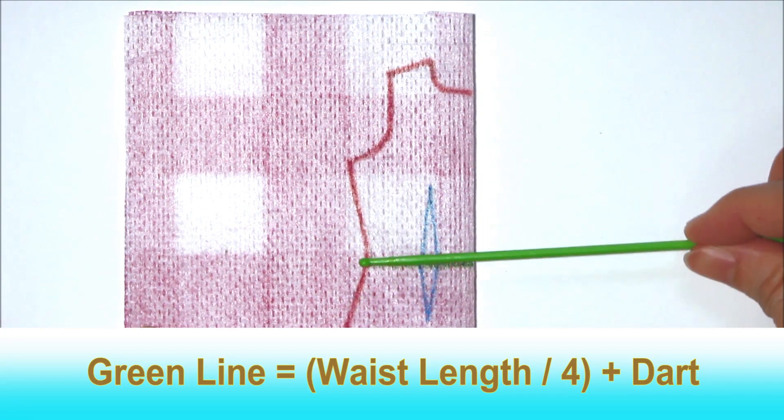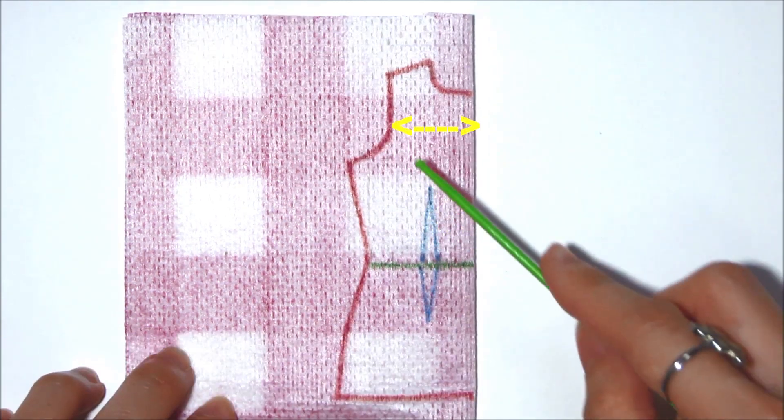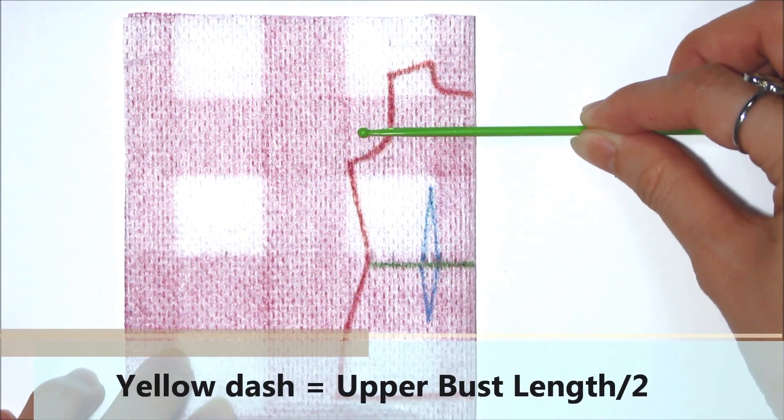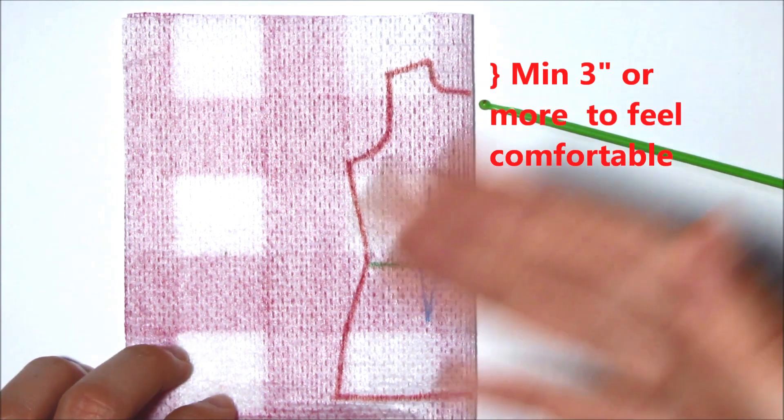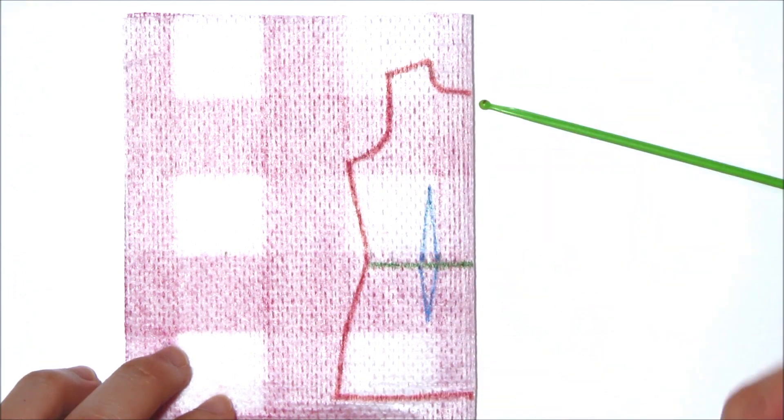The green line is one-fourth of your waist length plus the length you allocate for each dart. This yellow line is where your upper bust measurements will come in. And the distance for your collar hole should minimally be 3 inches. Any lesser and you'll feel like you're being strangled.